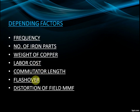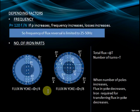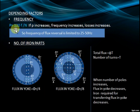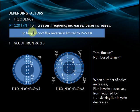Frequency: P equals 120F divided by N. If P increases, frequency increases and losses increase. So the frequency of flux reversal is limited to 25 to 50 Hz.